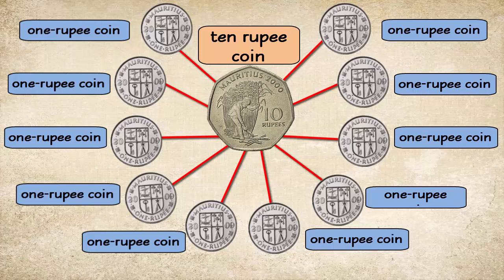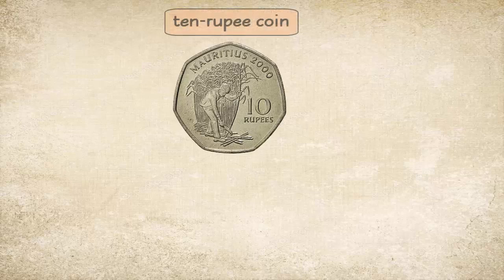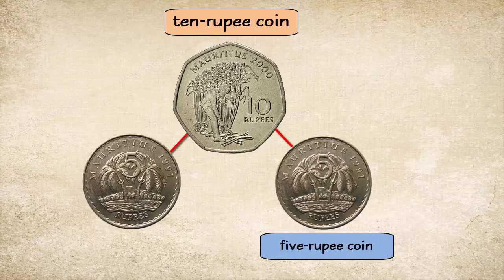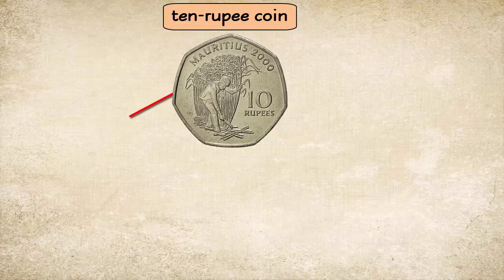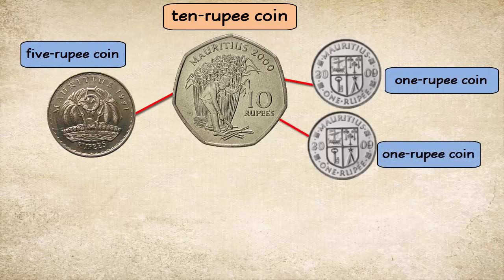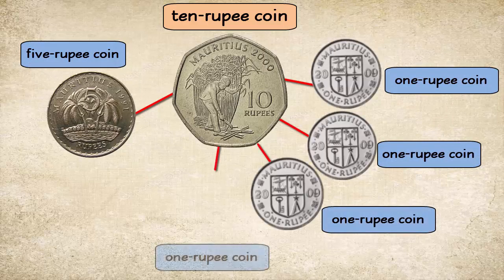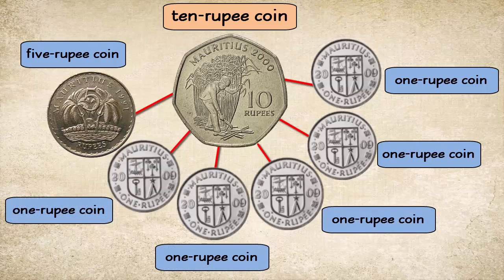Ten rupee coin is equal to ten one rupee coins. Ten rupee coin is equal to two five rupee coins. Ten rupee coin is equal to one five rupee coin and five one rupee coins.